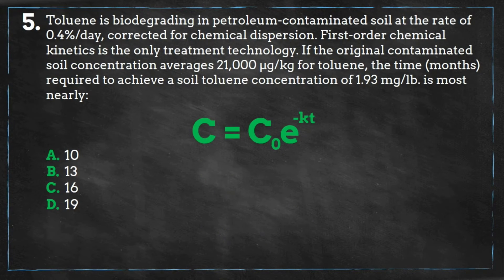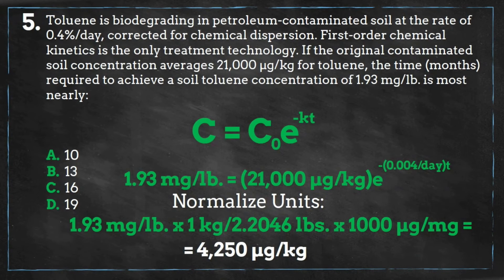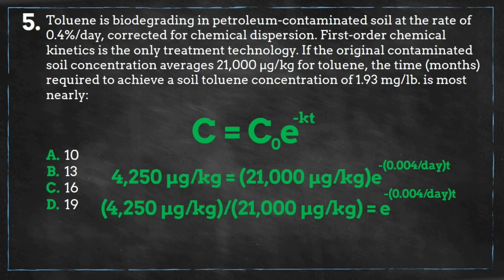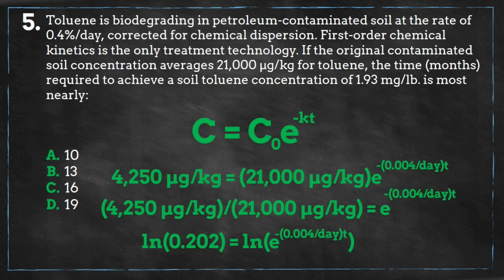We plug in our initial concentration and concentration of interest and we see that we need to normalize the units to complete the problem. Once we get our concentration of interest in the same units as our initial concentration, we can proceed with solving for T. We'll divide both sides by 21,000 micrograms per kilogram and then take the natural log of both sides to cancel out the number E on the right.